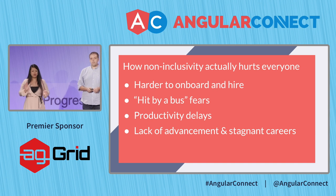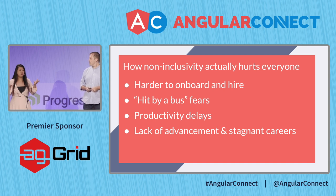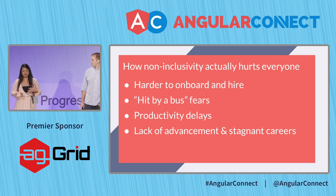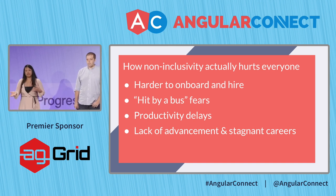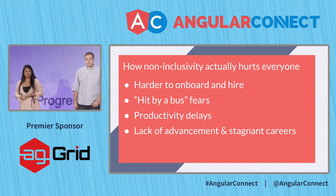In addition to that, this whole idea of individual excellence — relying on senior developers to just do the work — means all of a sudden you have what we like to call hit-by-a-bus fears. If only certain people understand certain pieces of the codebase, what happens if they leave or get hit by a bus? Complex codebases also make teams more unproductive. When your codebase deviates from industry standards, it's much more difficult for anybody to get productive immediately.